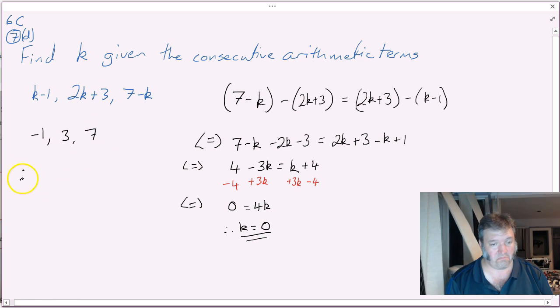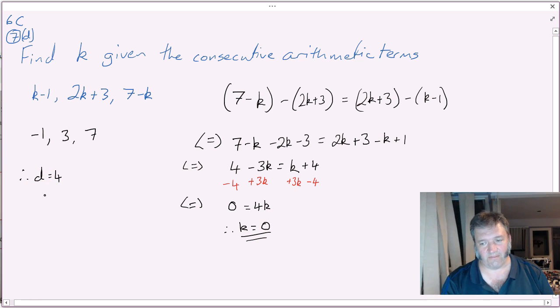Ah, that has a constant difference of 4, doesn't it? So even though it's a bit unusual where we've got k equaling 0, it works fine.